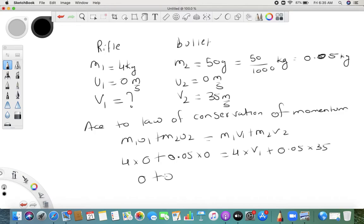Basically both of these will become 0. This is 4v1, and when we convert 5 upon 100 times 35, we can cancel: 5 into 20, then 5 into 4, and 5 into 7. So basically it is 4v1 equals 7 upon 4.